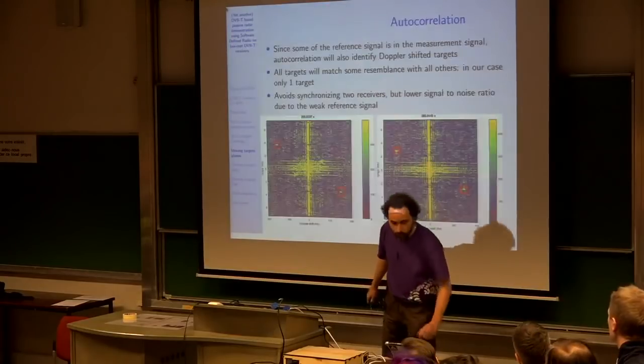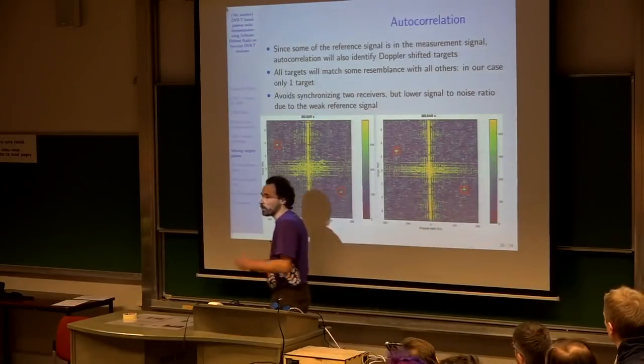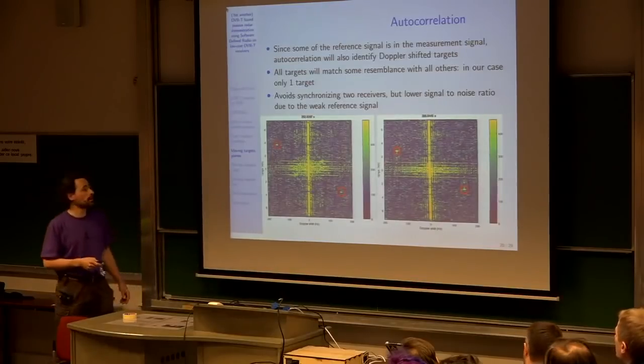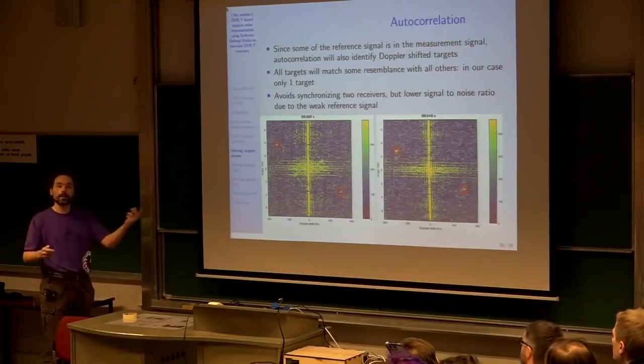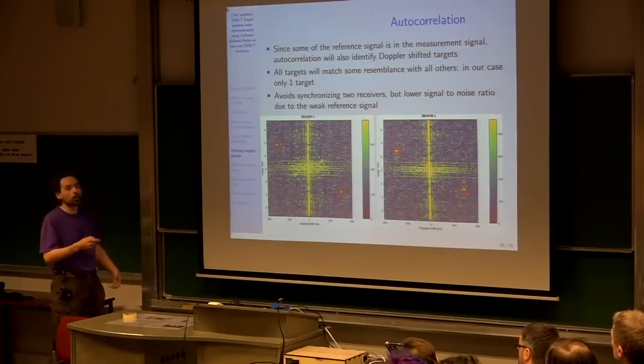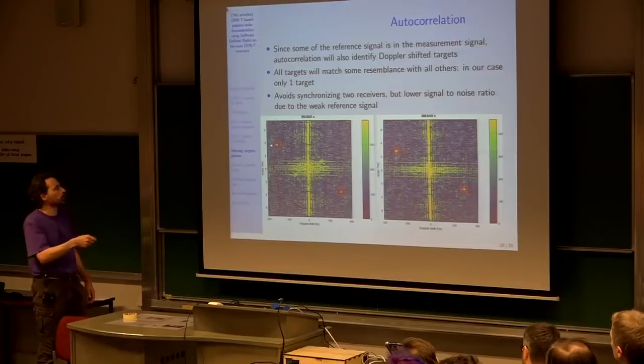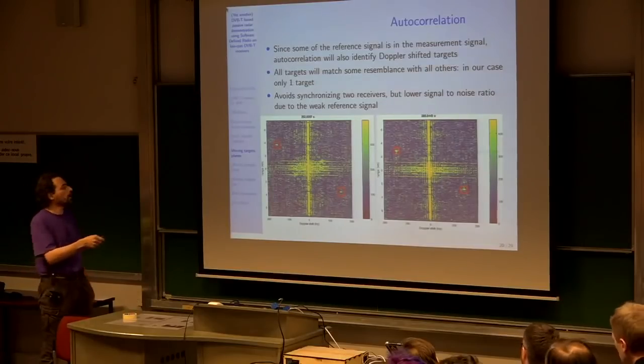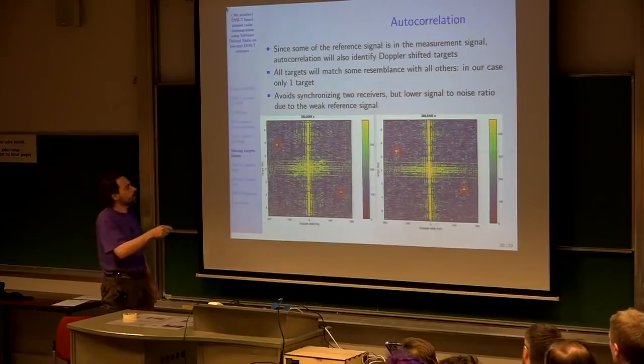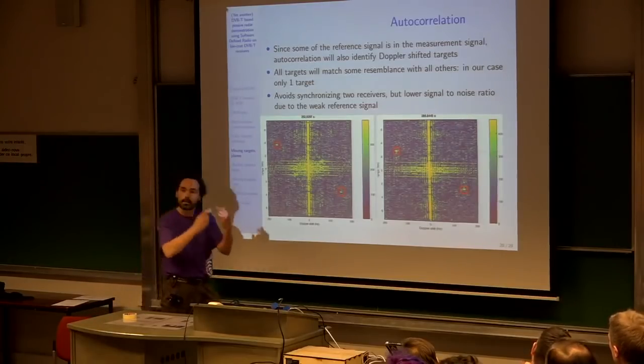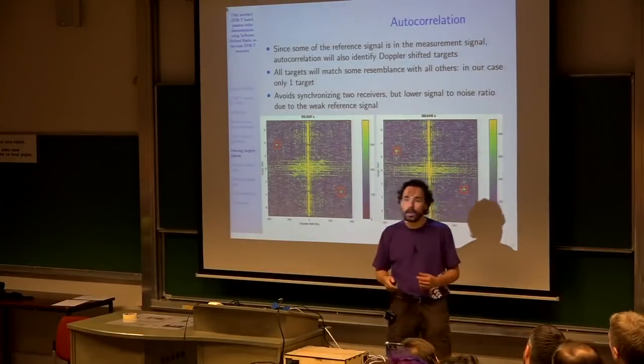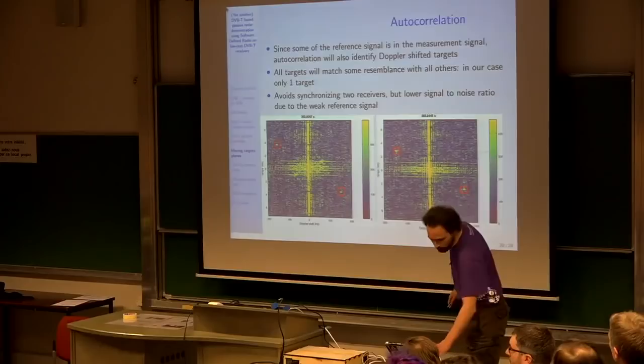We can do the same with autocorrelation, because if you want to avoid all the issues about synchronizing two DVB-T, there's always a bit of leakage of the reference signal on your measurement signal. The autocorrelation will give you the same result, of course with a poor signal-to-noise ratio. Here, it works very well, because there's only one target, but if you have multiple targets, you get all the mixing between all the targets. So autocorrelation is one way of getting the story without all the hassle of synchronizing multiple receivers.